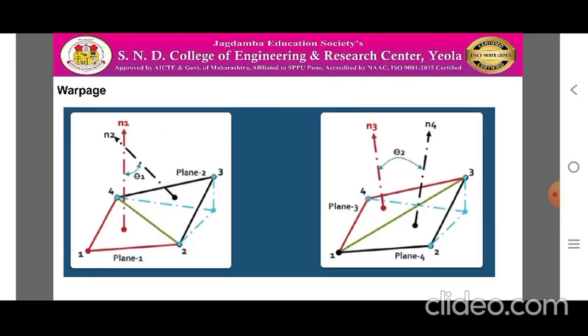Warping angle is defined as the angle between the normals of two triangular planes formed by splitting the quadrilateral element along the diagonals. The maximum angle, out of two possibilities, is reported as a warp angle. In case of solid elements, an element face deviates from being planar. A quad is divided into two triangles along its diagonal and the angle between the triangle normals is measured. The ideal value for warping angle is 0 degrees and it is acceptable below 5 degrees to 10 degrees.